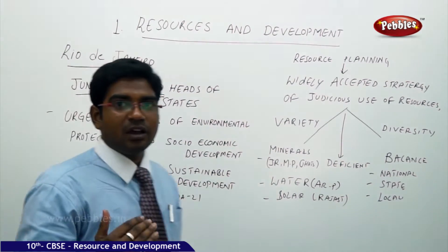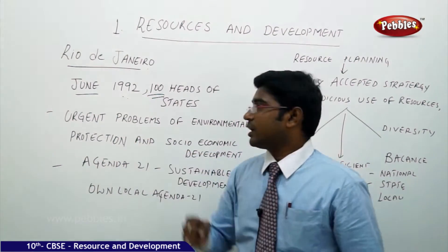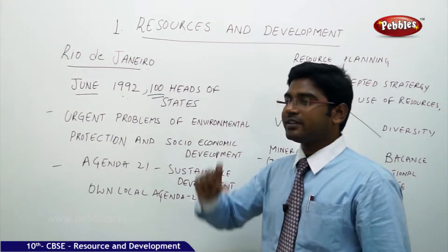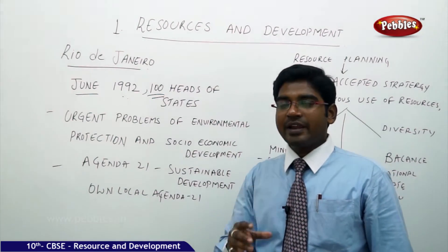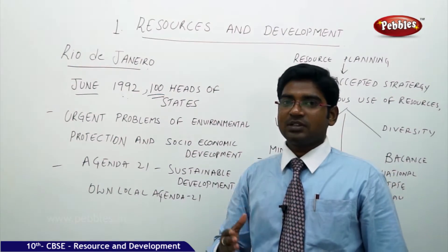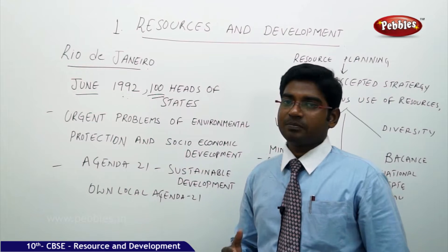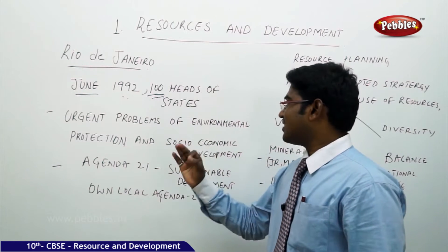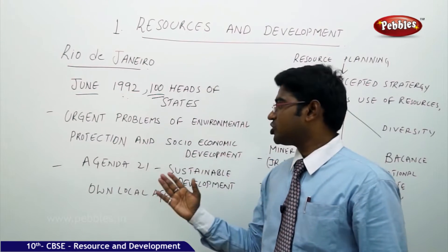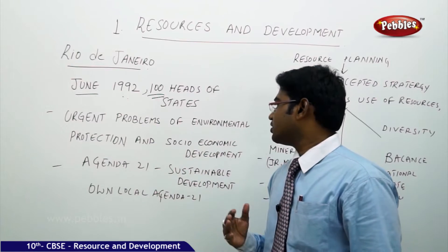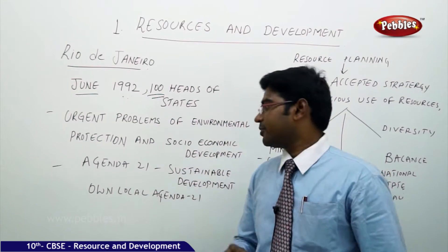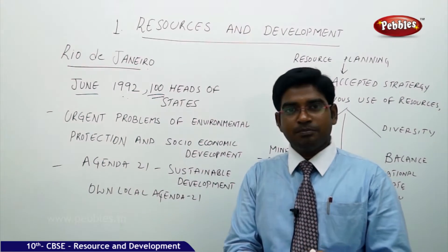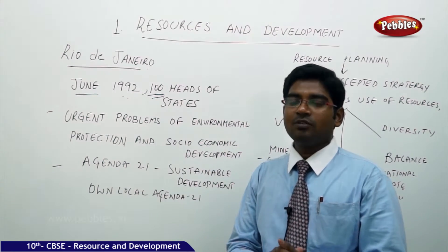The main agenda of the Rio de Janeiro summit, held in June 1992, was attended by 100 nations' heads of state in Brazil, where their main concern was the urgent problems of environment protection and socio-economic development. These are the main concerns of people all over the world.